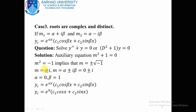So √(-1) is actually iota. This is a complex number which can be written as 0 ± iota·1. So 0 represents alpha and 1 represents beta. By comparison, we obtain alpha = 0 and beta = 1. So the complementary solution is yc = e^(alpha·x)(c1·cos(beta·x) + c2·sin(beta·x)). Putting alpha = 0 and beta = 1, we obtain yc = e^0 · (c1·cos(x) + c2·sin(x)).